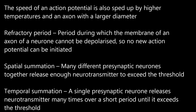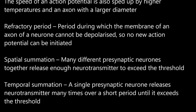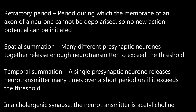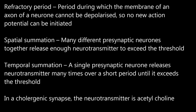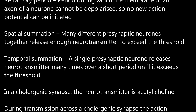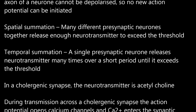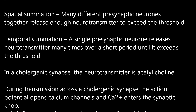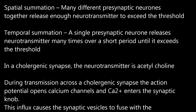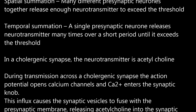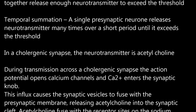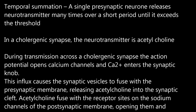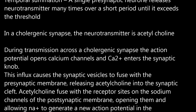Refractory period: the period during which the membrane of an axon cannot be depolarized, so no new action potential can be initiated. Spatial summation: many different presynaptic neurons together release enough neurotransmitter to exceed the threshold. Temporal summation: a single presynaptic neuron releases neurotransmitter many times over a short period until it exceeds the threshold. In a cholinergic synapse, the neurotransmitter is acetylcholine.